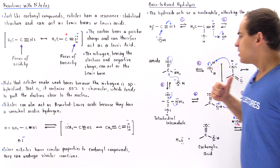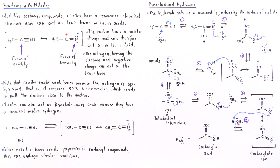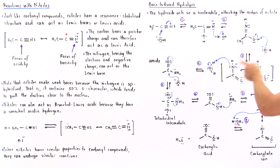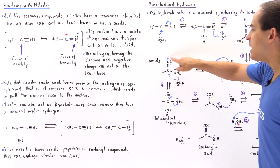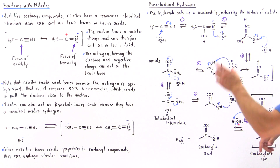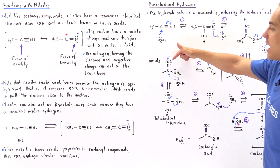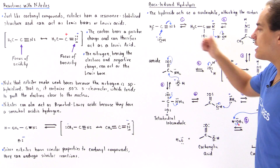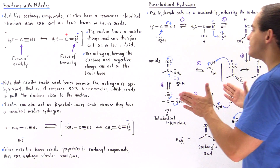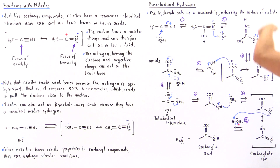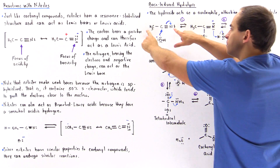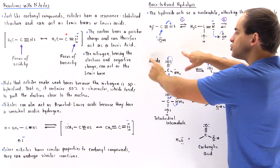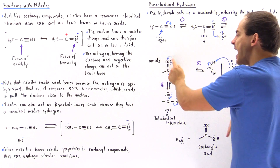In step four, we protonate the nitrogen so that we place two H atoms onto the nitrogen and we have a double bond between our oxygen and our carbon. So in four steps, we go from the nitrile to an amide.